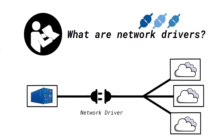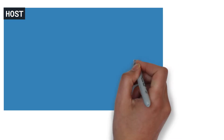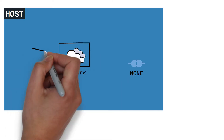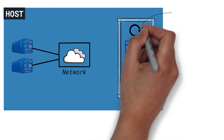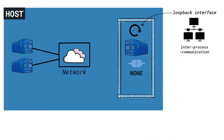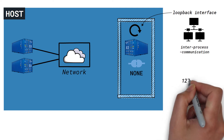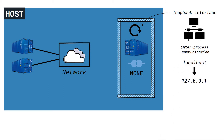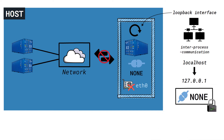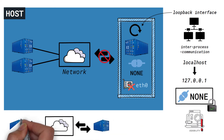So what is the none network driver? The none driver simply disables networking for a container, making it isolated from other containers. Within the container, only the loopback interface is created to enable inter-process communication, using the IP address 127.0.0.1 mapping to the familiar name localhost. But the absence of other network interfaces like eth0 means neither can it reach external networks nor can external networks reach it. This makes the none network driver very secure from a network perspective, but it also limits its usability as we usually wish to enable communication between containers.